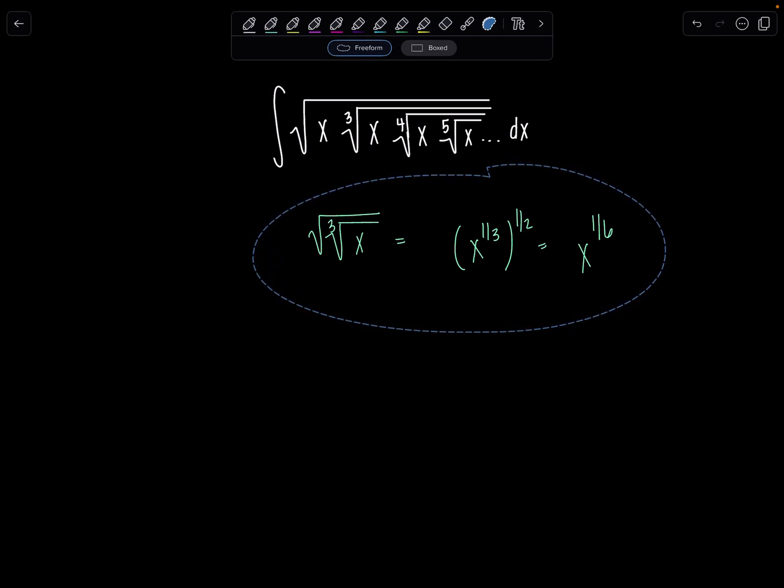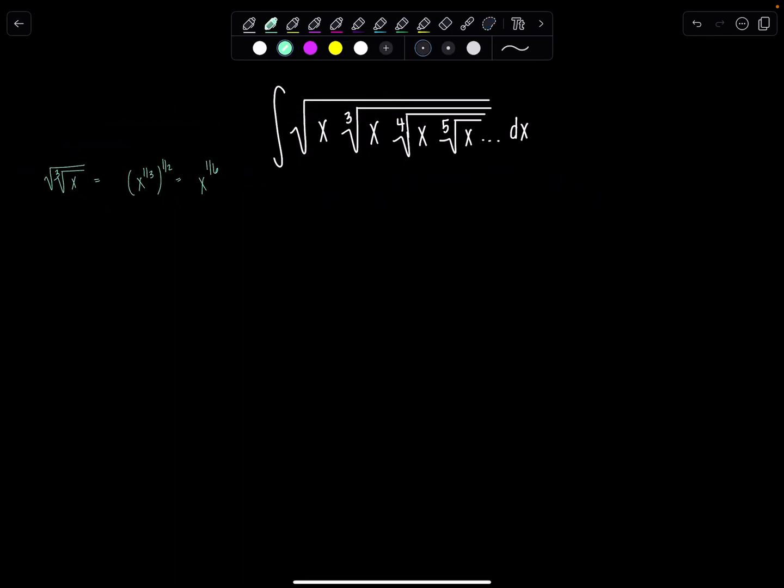I'm going to rewrite the integrand using rational exponents. This x is only underneath the square root sign so that's just x to the one-half, and then that's going to be multiplied by, now look here, this is cube root of x but it's also underneath the square root so that would be x to the one-sixth.